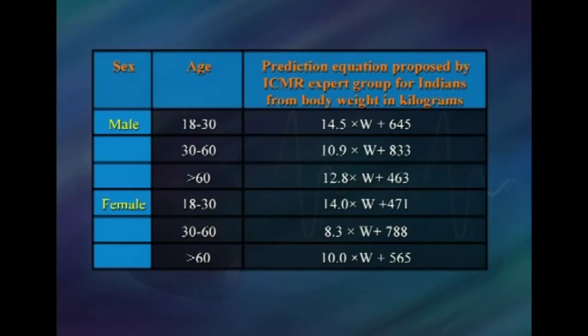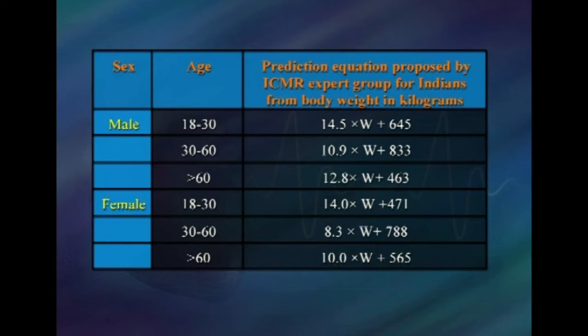Equations for predicting BMR from body weight in kg: for males aged 18–30 years, BMR = 14.5 × weight + 645; for males aged 30–60 years, BMR = 10.9 × weight + 833; for males above 60 years, BMR = 12.8 × weight + 463. For females aged 18–30 years, BMR = 14 × weight + 471; for females aged 30–60 years, BMR = 8.3 × weight + 788; and for females above 60 years, BMR = 10 × weight + 565.